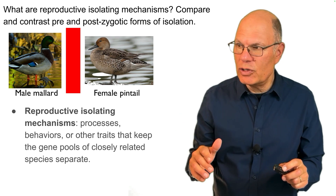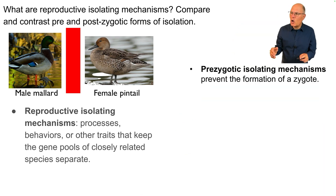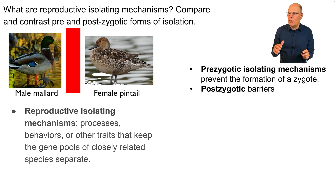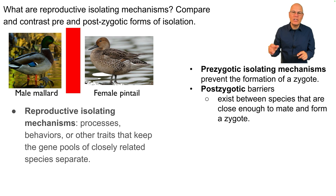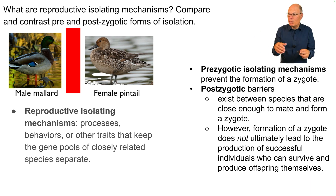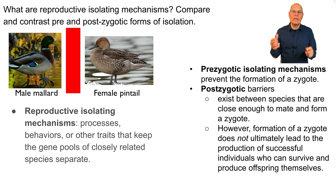There are two kinds of barriers. The first are pre-zygotic isolating mechanisms, and they prevent breeding altogether — they prevent the formation of a zygote. Post-zygotic barriers exist between species that are close enough to mate and form a zygote, but formation of a zygote doesn't ultimately lead to the production of successful, viable individuals who can survive and produce offspring themselves.